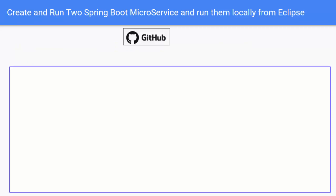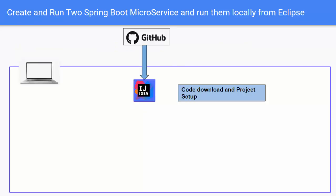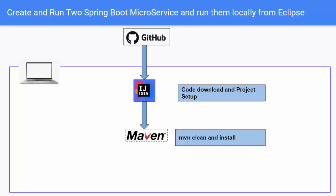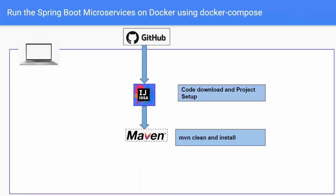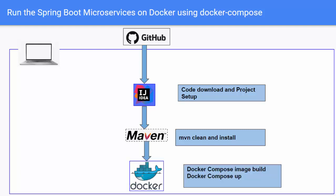If I think about the overall flow, I will download the project from GitHub into my local system and set it up on IntelliJ IDEA. Then I have to perform Maven clean and install, and finally run it. Regarding the Docker run, it would be the same — download the project, set it up, perform Maven clean and install. On top of that, I need Docker, and I will use docker compose image build and then docker compose up to run this.